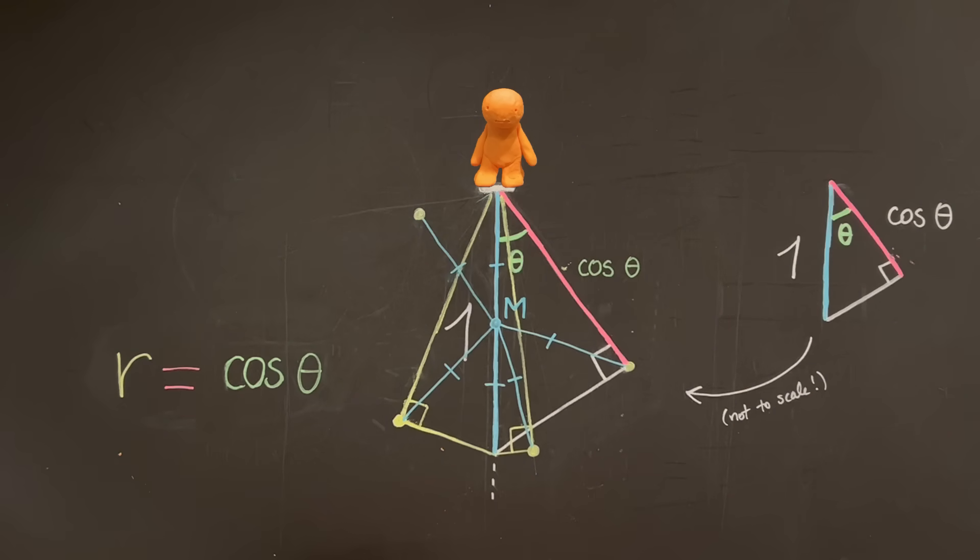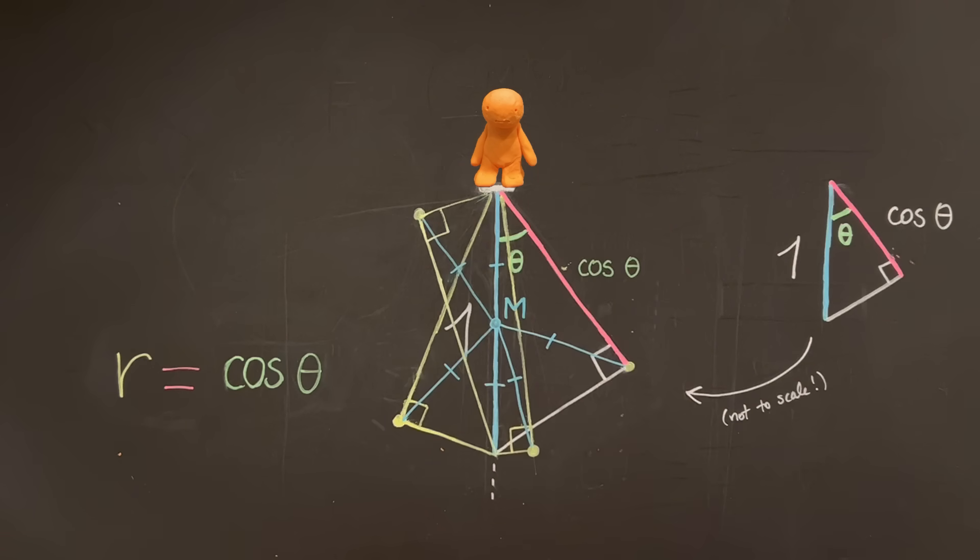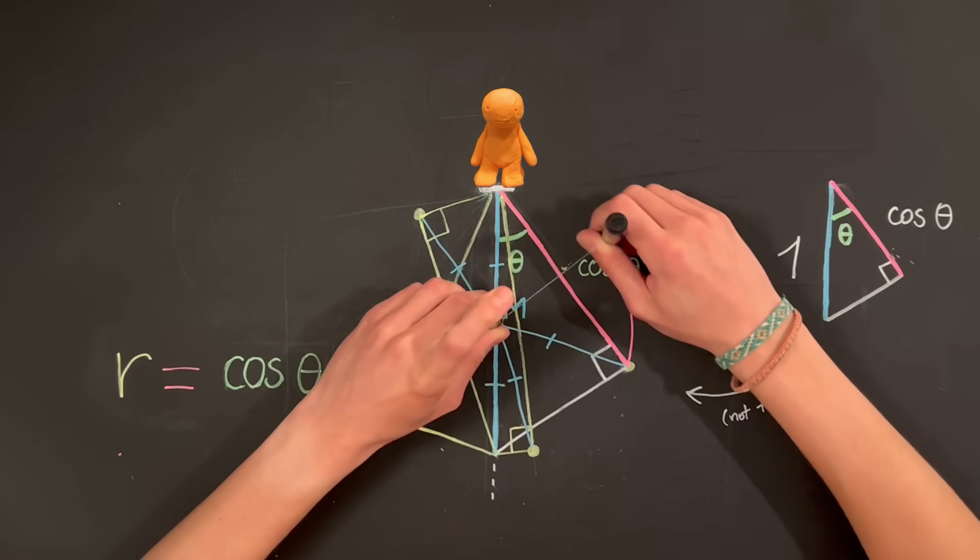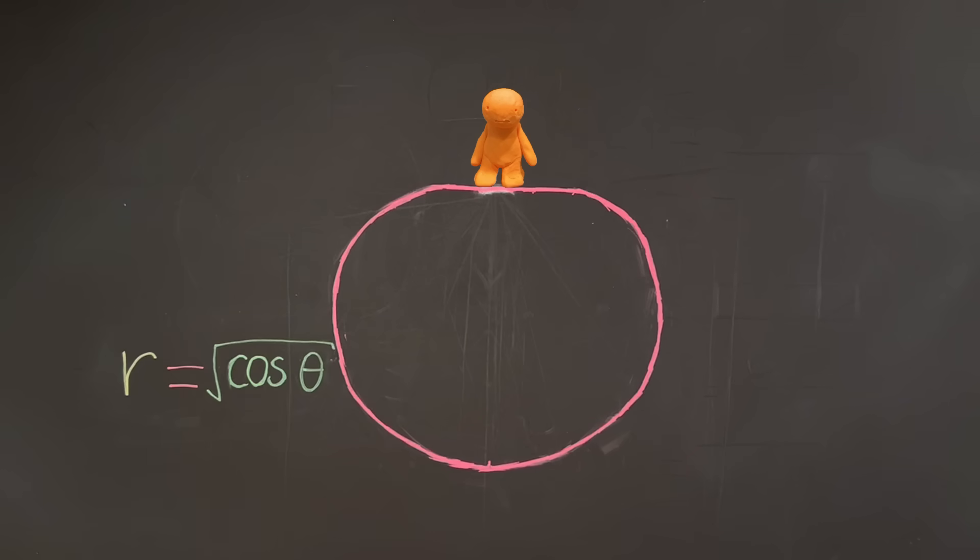Similarly, any point one half away from point M forms one of these right triangles. Thus, the new equation generates a circle of unit diameter. As you can see, taking out the square root transforms our dewdrop into a ball.